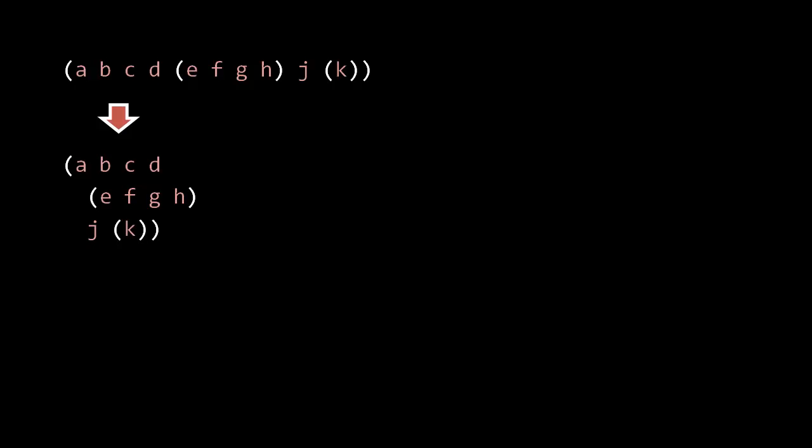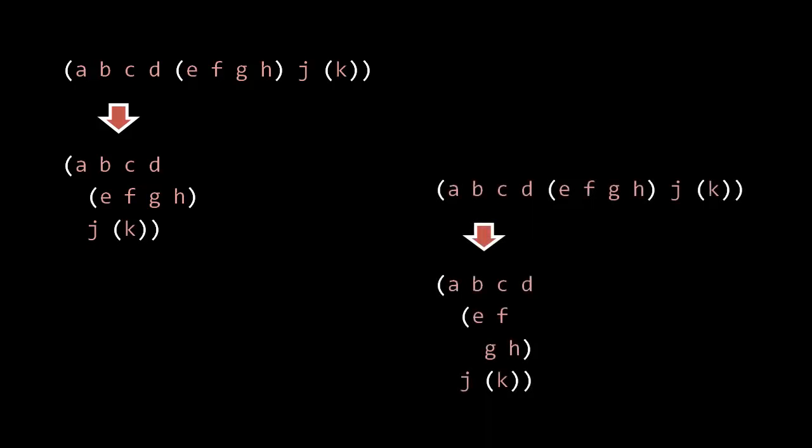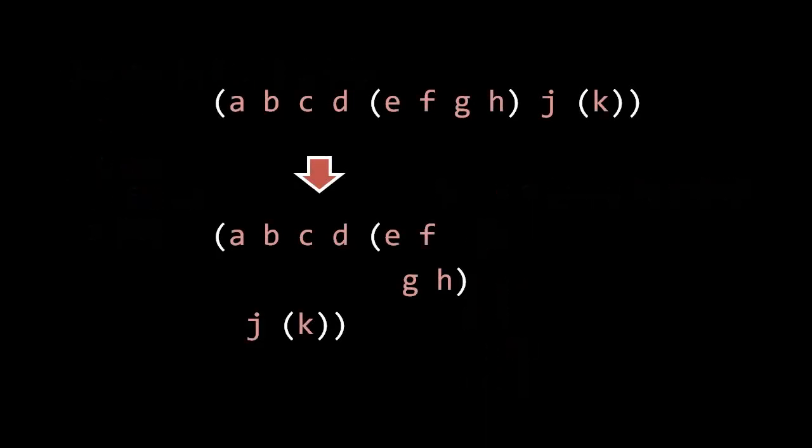Sometimes the arguments we're spreading onto succeeding lines are themselves lists, and generally particularly longer lists you're going to want to put on their own line, but you don't have to. When you do split them up, it's basically just the same rules — you indent in by two spaces. Sometimes you have an interior list, a list which doesn't start at the start of the line, which you want to spread onto multiple lines. When you do this, again you're indenting in by two spaces but starting from the start of that list. If there are any arguments after that interior list, they should continue indented two spaces respective to the list which contains them, not the interior list.